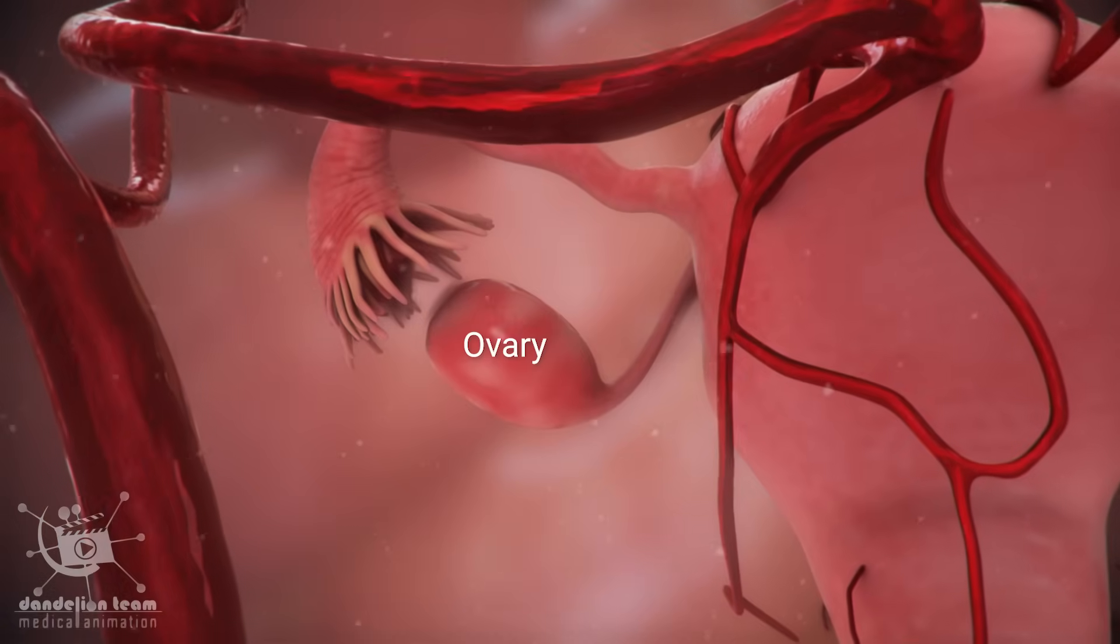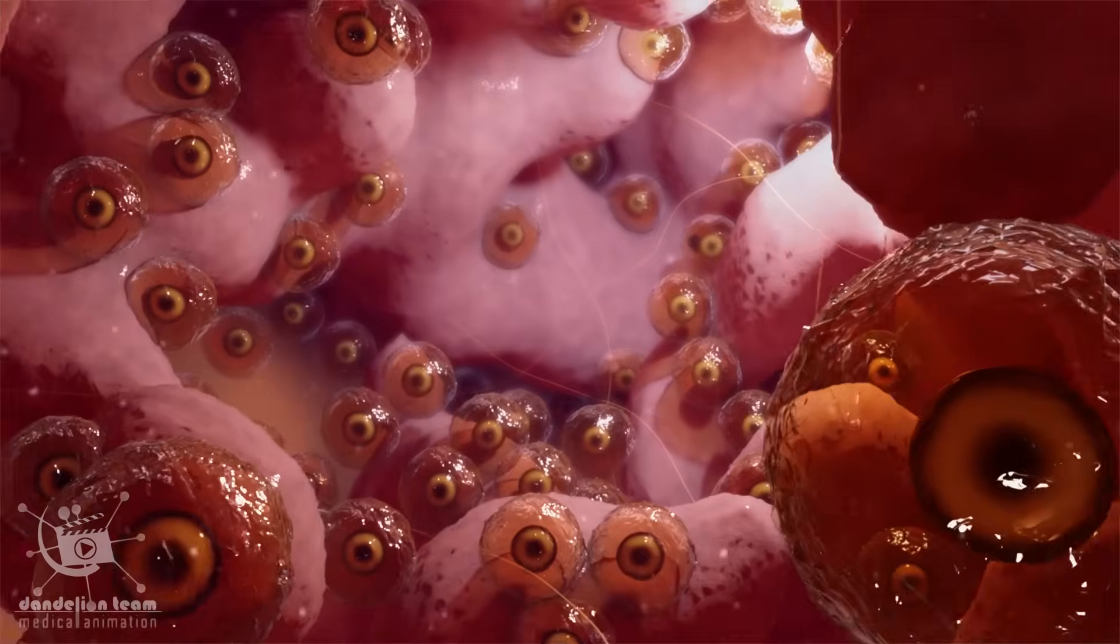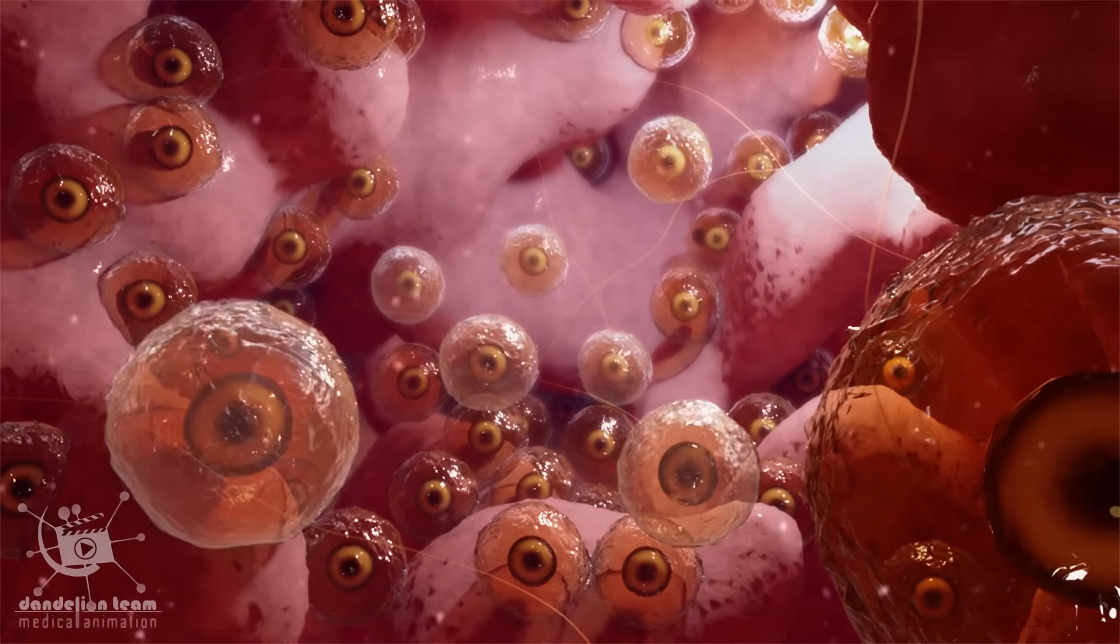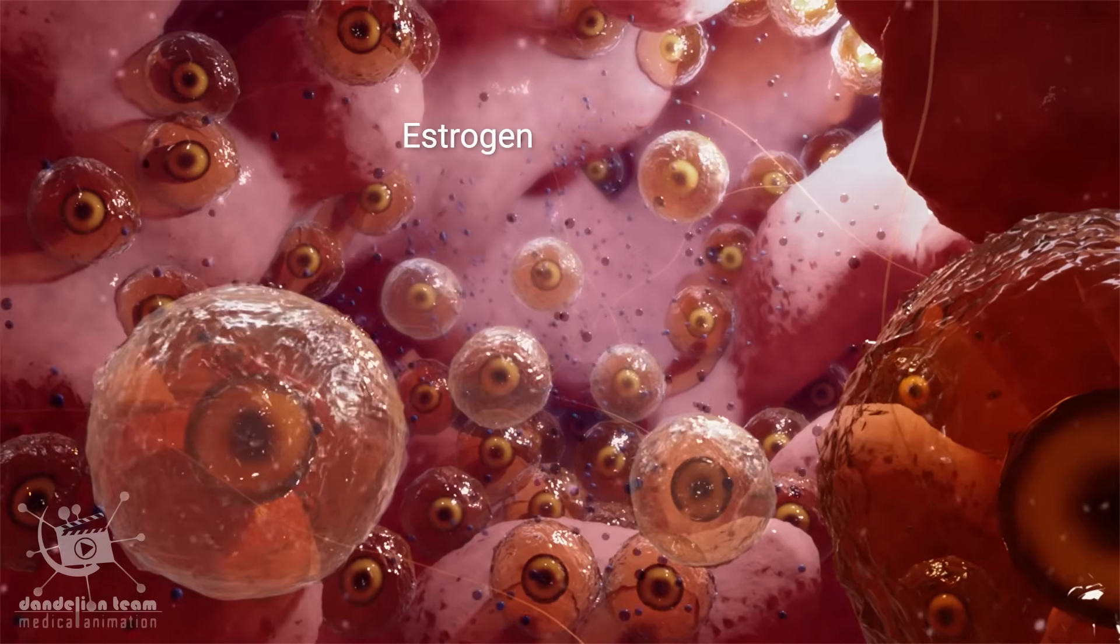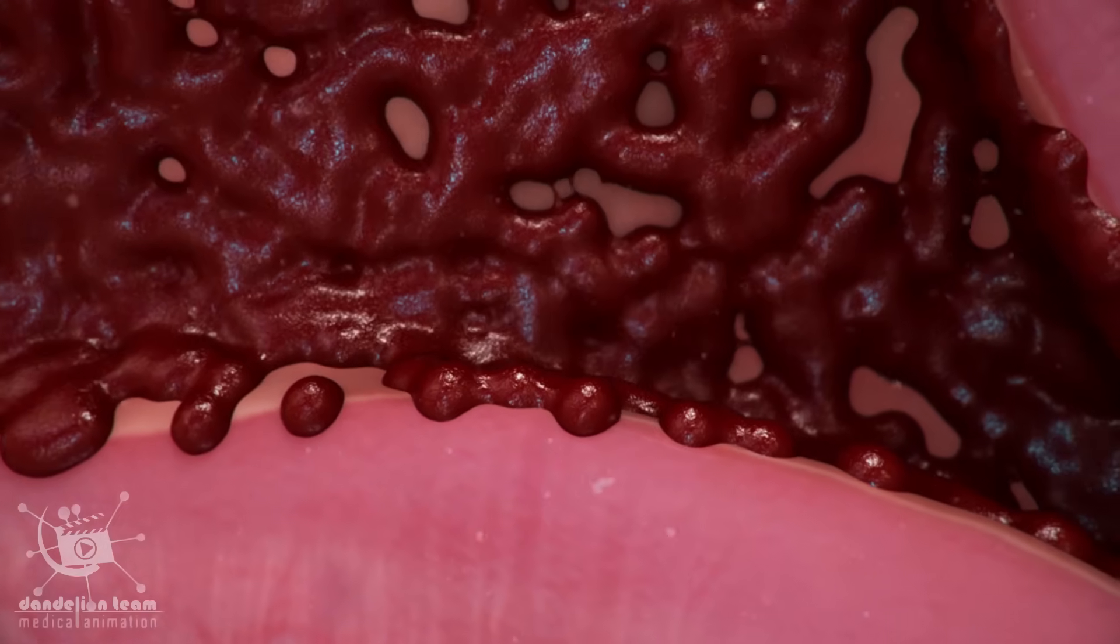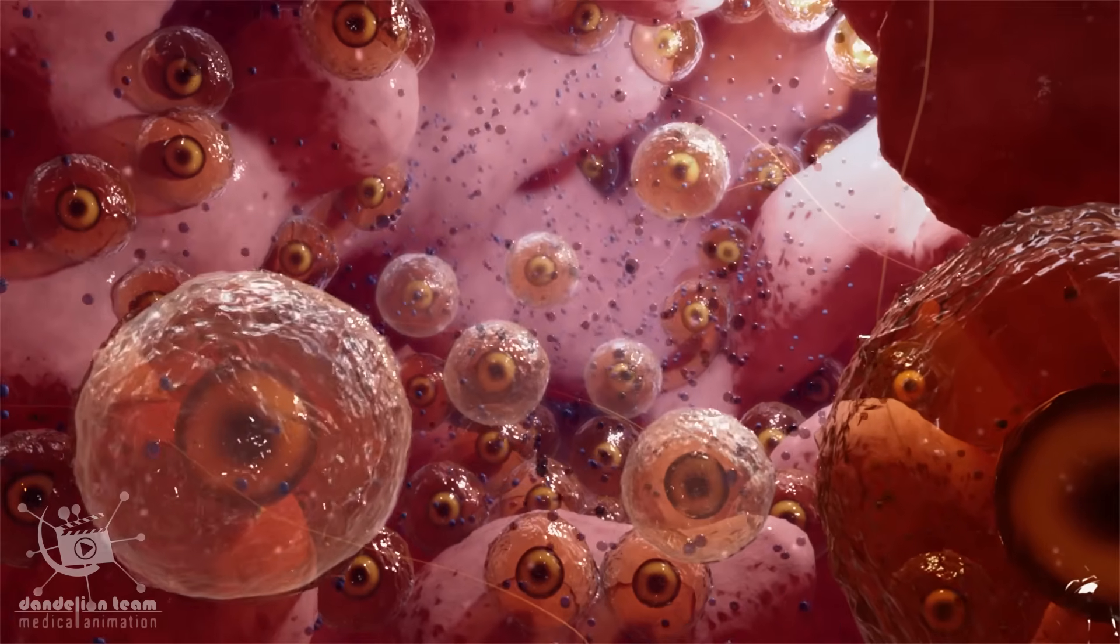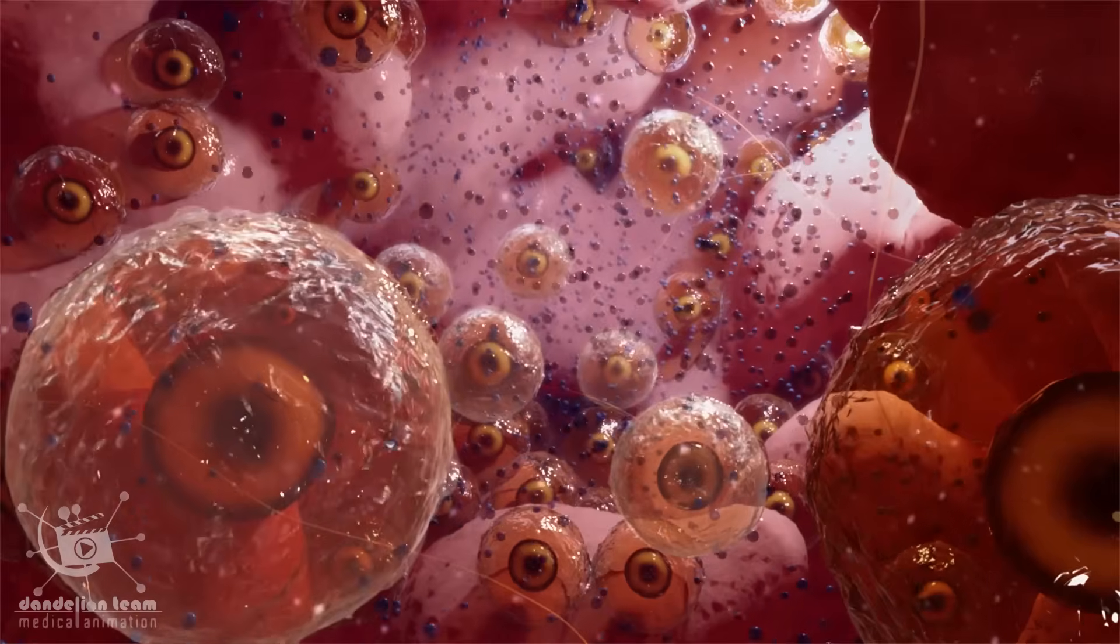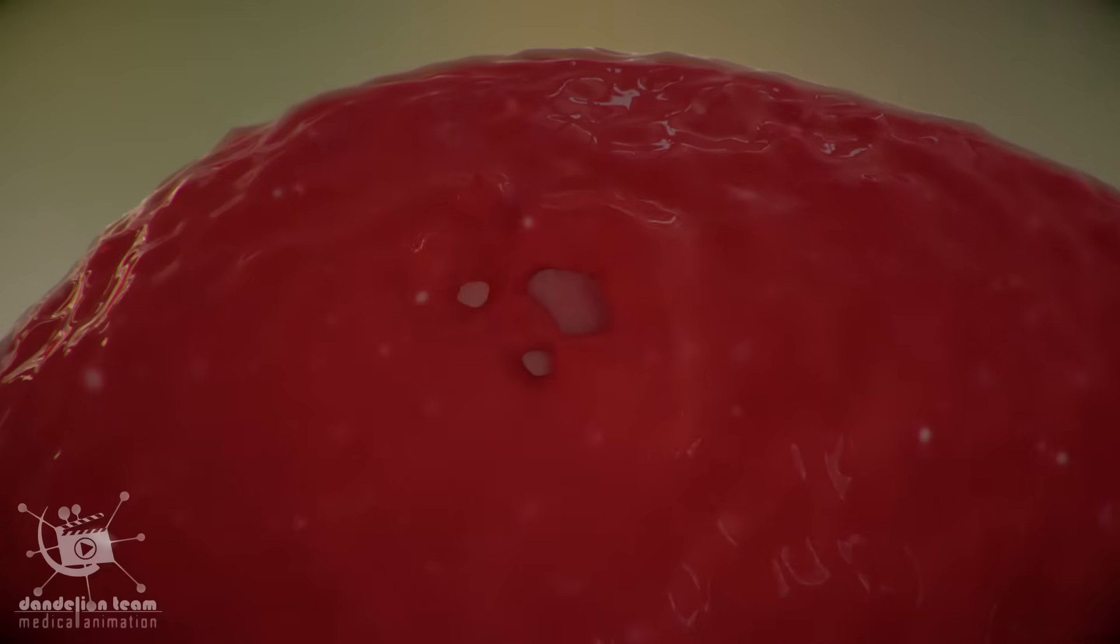These hormones cause about six to twelve follicles to awaken and start to mature. As they mature, they release estrogen hormone and cause the lining of the uterus to begin to build up. Then one of those six to twelve follicles tends to grow a little faster and becomes dominant. This dominant follicle moves to the edge of the ovary to produce an egg.